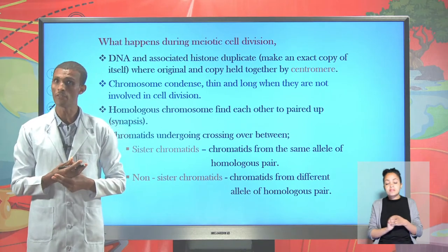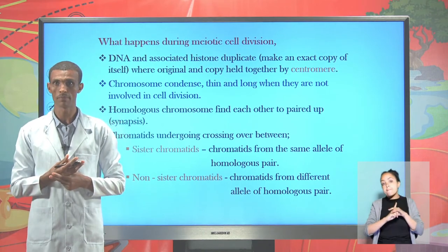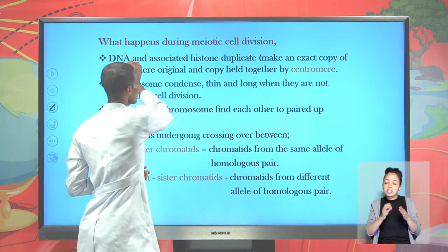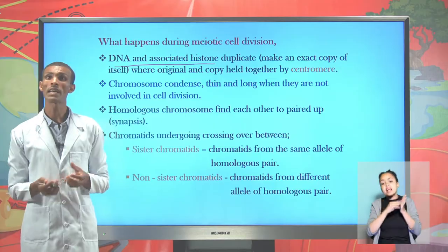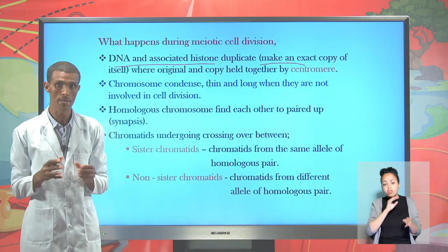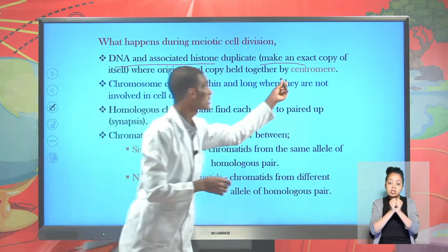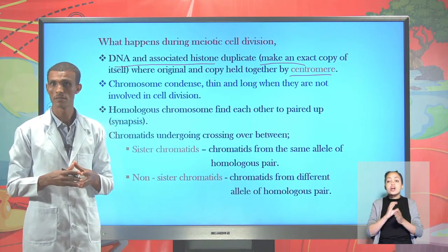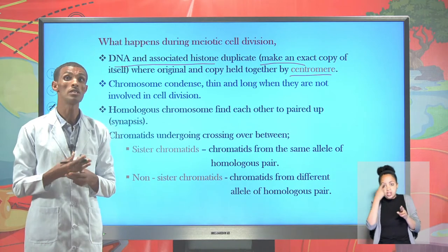During meiotic cell division, some important biological processes occur. Before meiosis begins, DNA and associated histone proteins become duplicated — making an exact copy of itself. The original parental chromosome becomes copied, and the copy and original chromosome are held together by the centromere. Chromosomes also become condensed; when they are not ready for division and are found thin and long, they are called chromatin.